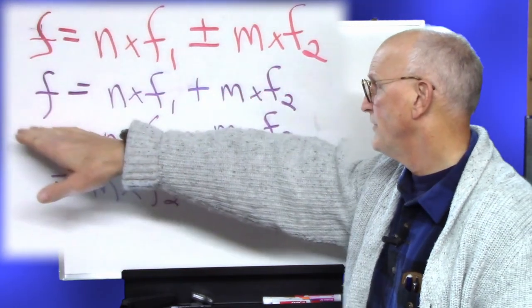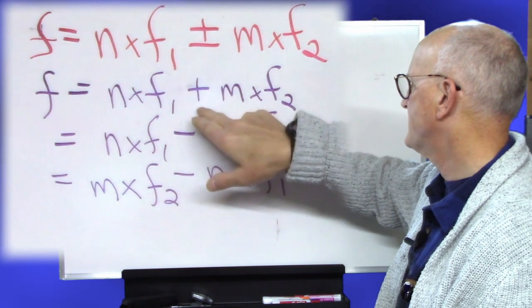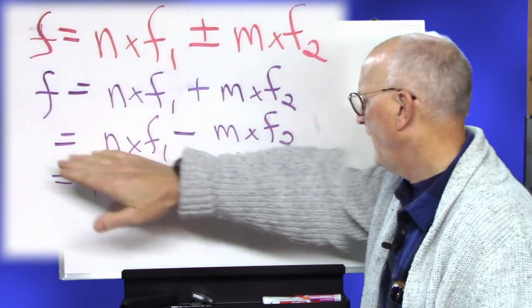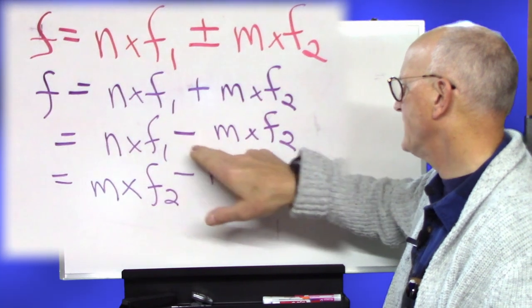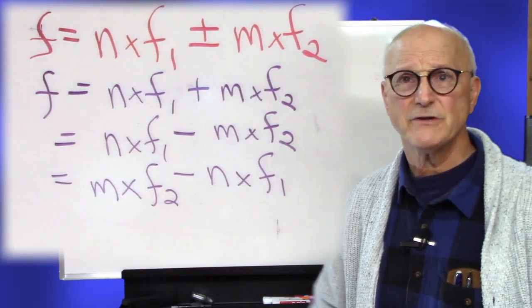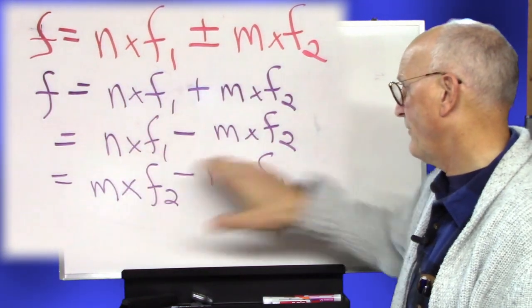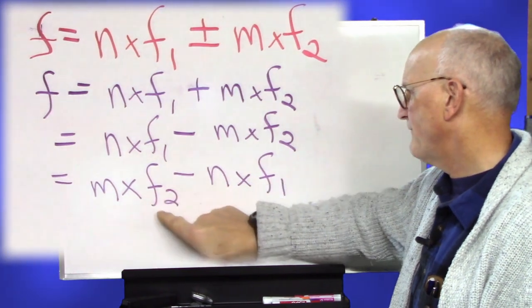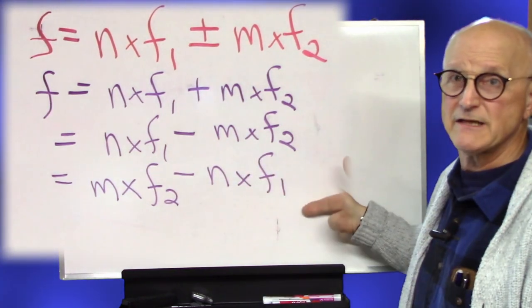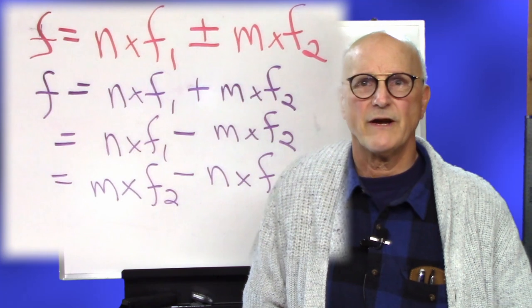So, we have the new frequency is n times the first frequency, plus m times the second frequency. That's one output of the mixer. Then we have n times the first frequency, minus m times the second frequency. Sometimes this ends up giving you a negative number. So, that's kind of an irrelevant, impossible thing. That's why we switch it around here and have m times f2 minus n times frequency 1. And if this one's negative, that's going to be positive. And if this one's positive, that one's going to be negative. That way you get the complete story.